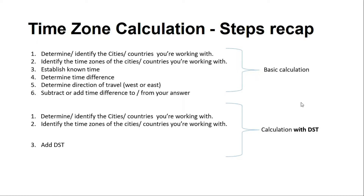Step three changes when dealing with DST. Once you have identified the countries and written down their time zones, next to the time zone of whichever country practices DST, write in brackets 'plus one hour DST.' I prefer doing this at the beginning of the calculation rather than at the end. Then you establish the known time, which is generally given in the scenario.